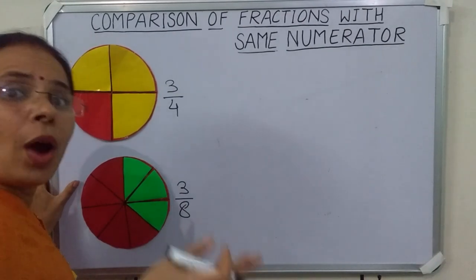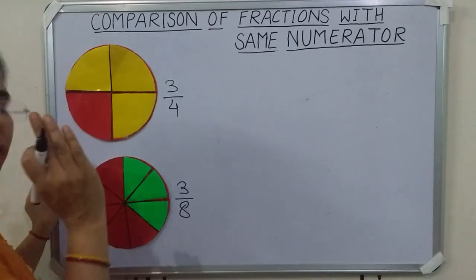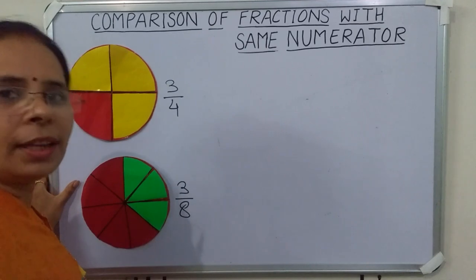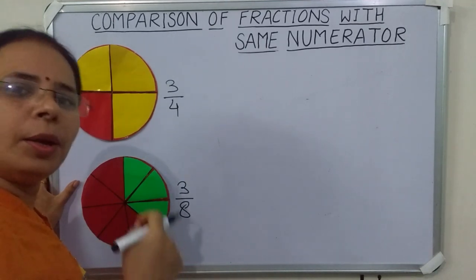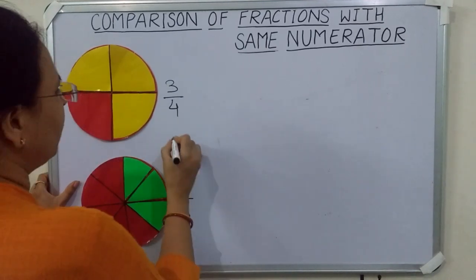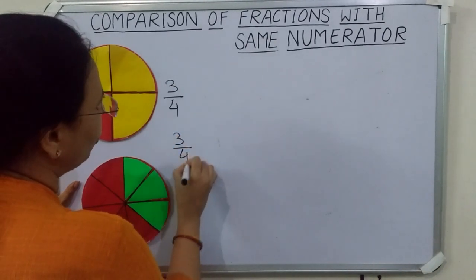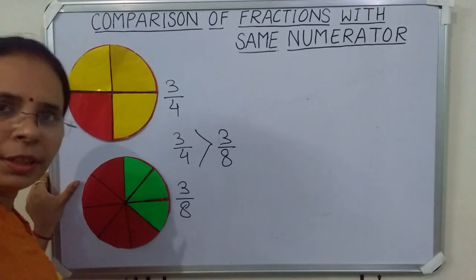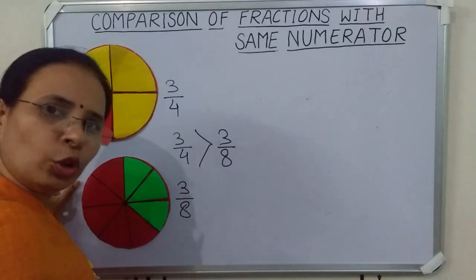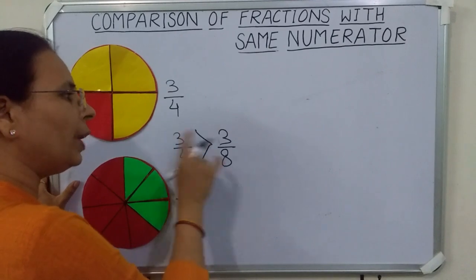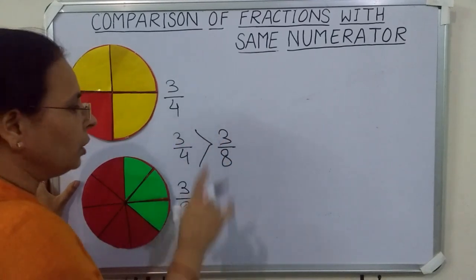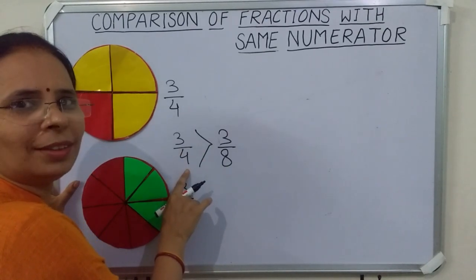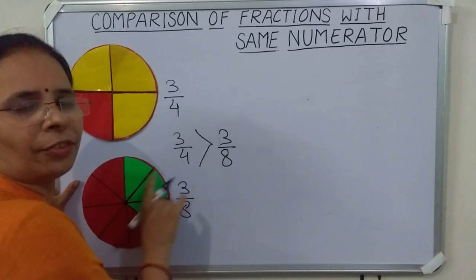Why is it so? Children, the more we divide a whole, the size of each part becomes smaller. So we can say three upon four is greater than three upon eight. When we compare those fractions whose numerators are same, the fraction having smaller denominator is the greater fraction.